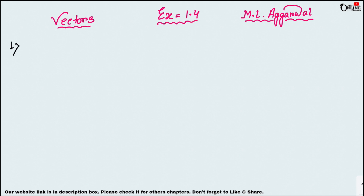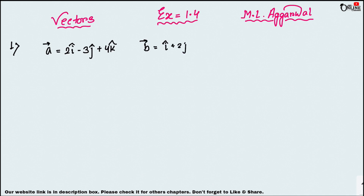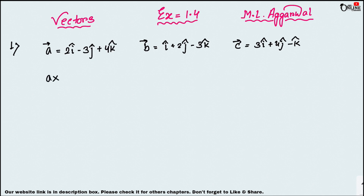Sum number one: if vector a equals 2i − 3j + 4k, vector b equals i + 2j − 3k, and vector c equals 3i + 4j − k, then find first (a×b)·c, and second a·(b×c).